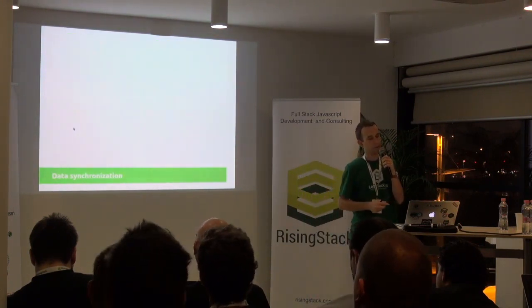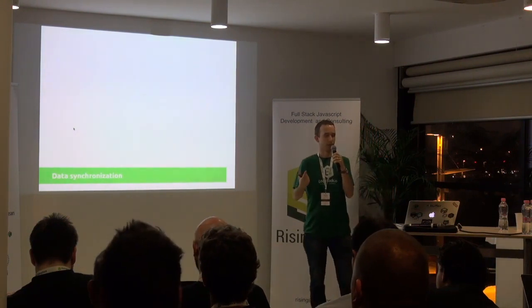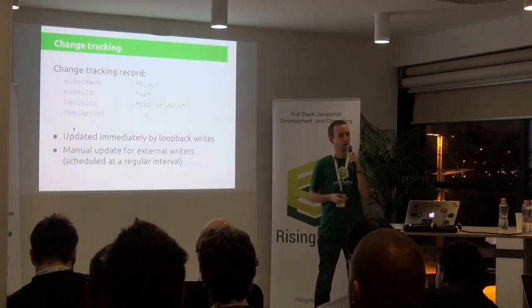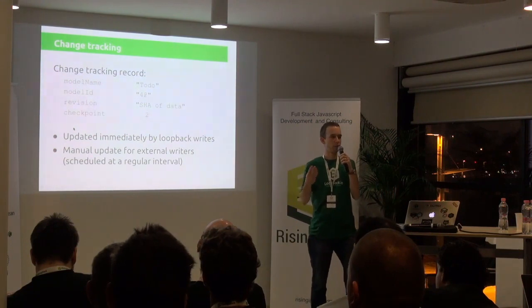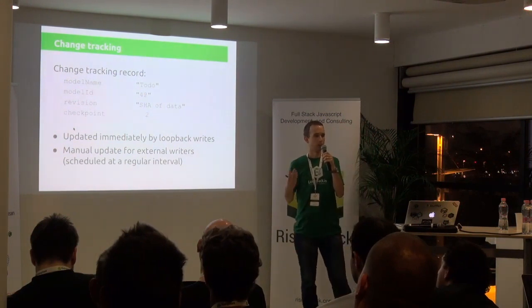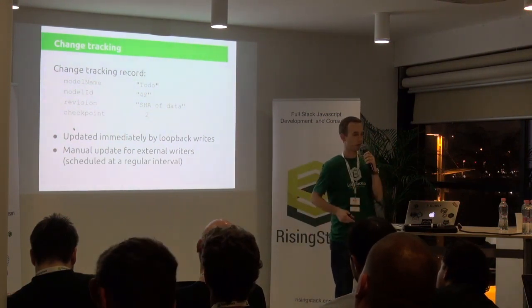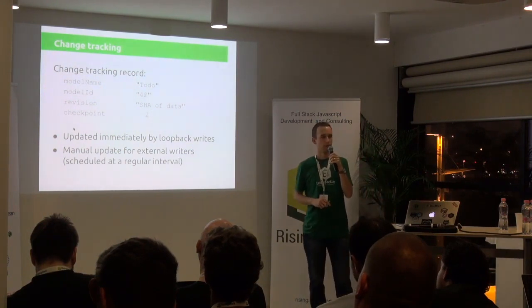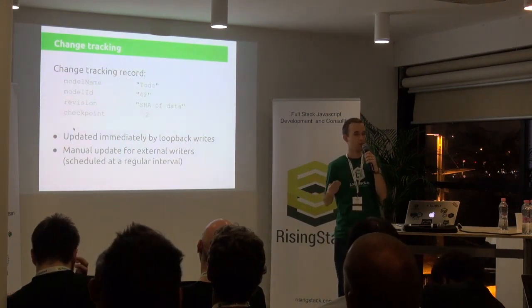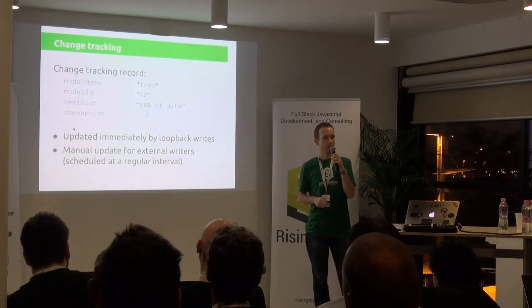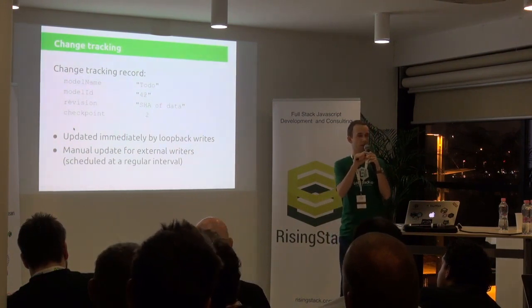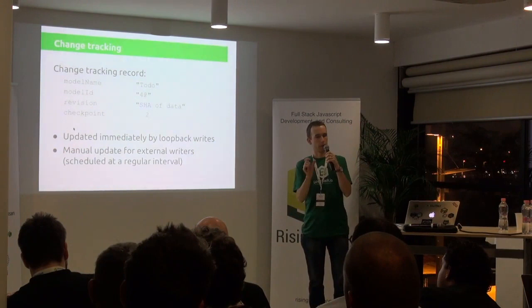Once we have this done, we needed to fix the second problem, which is how to synchronize data. We decided to implement a generic change replication algorithm where we are replicating changes between two data sources. It can be your local browser and your remote server, or it can be two databases like your legacy Oracle database and your shiny new frontend MongoDB database. In order to replicate changes, we need to keep track of them to know what changes have been made. So we are maintaining change tracking records.